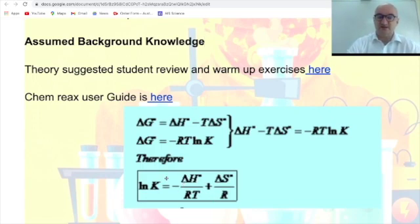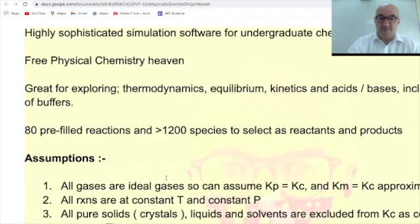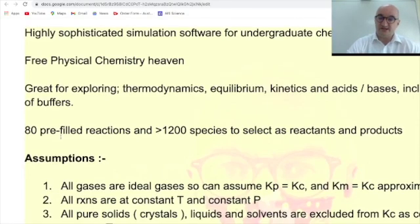And this can be for 80 pre-filled reactions. Eighty! You know, two people have the same research question. And if you want to be flamboyant and push the boat out, over 1,200 different species that you can select to make your research question robust and hit those high bands for internal assessment.